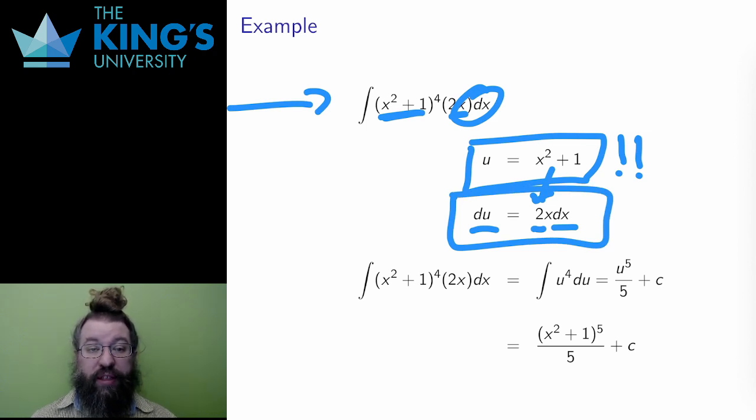Now I try to replace things in the original integral. A very important note here. I have to replace everything that involves the old variable. An integral which is only half-switched, which involves both the old and the new variable at the same time, doesn't make sense. When you do substitutions, make sure you change everything. All the x in the old, all the u in the new.